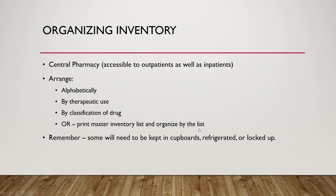How do we organize the inventory? In our central pharmacy, which is accessible to both outpatients and inpatients, we can arrange medications in a couple of different ways: completely alphabetically, by therapeutic use (ear meds together, eye meds together, oral antibiotics together), by drug classification, or we can print a master inventory list and organize by that. It really depends on what your clinic is used to doing and how quickly you can access medications.